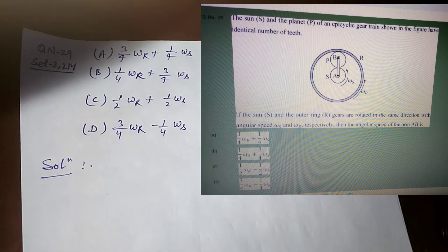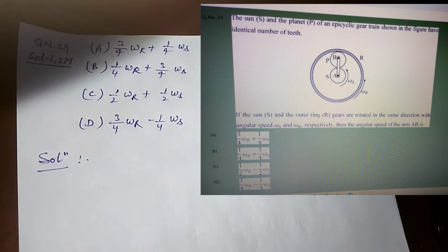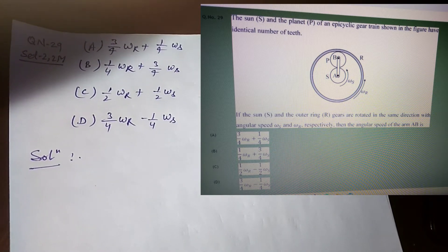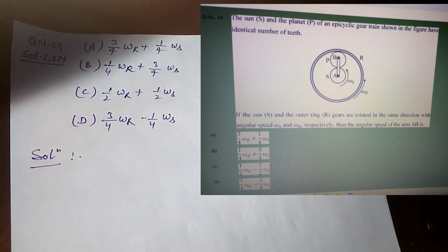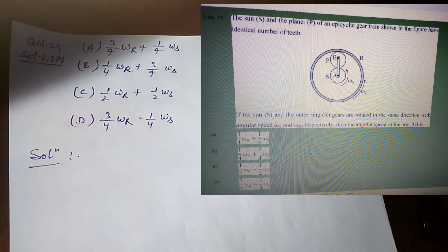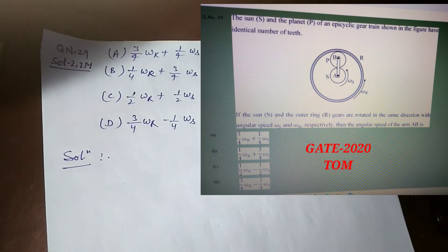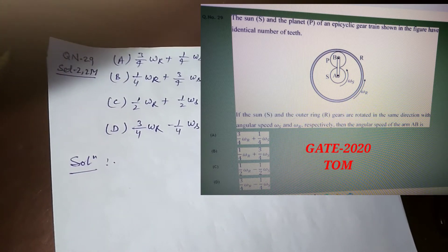Today I will discuss the solution of question number 29, which is from Theory of Machines. The question is on the screen: the Sun S and the planet P of an epicyclic gear train shown in the figure have identical number of teeth. If the Sun S and the outer ring gear are rotated in the same direction with angular speed omega_S and omega respectively, then the angular speed of arm AB is to be found.